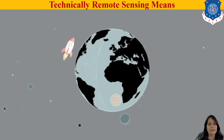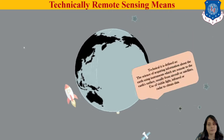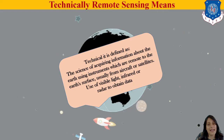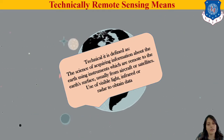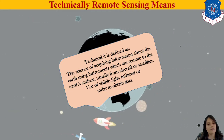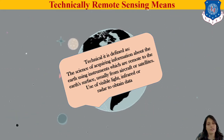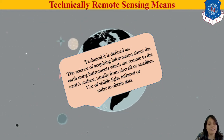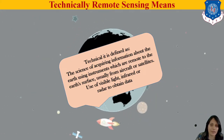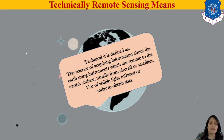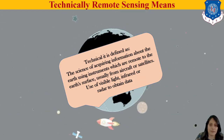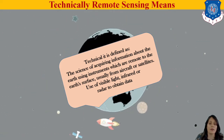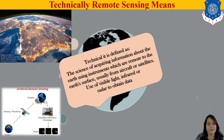Now, technical Remote Sensing means: the science of acquiring information about the Earth using instruments which are remote to the Earth's surface — usually from aircraft, space, or satellite — which uses visible light, infrared, and radar to obtain the data. The instrument is in a remote place and you are taking the information. That is technically what Remote Sensing means: without coming into contact, you are getting all the information.